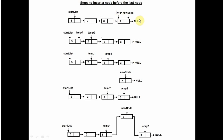What if the user wants to insert before the last node? The code is still the same. Temp1 and temp2 will move further with temp1 following temp2. They will keep on moving. Suppose the user wants to insert a new node before 3, so they will keep on moving. When temp2 reaches the node before which you want to insert a new node, the next member of temp1 is set to point at new node and the next member of new node is set to point at temp2. That's inserted.